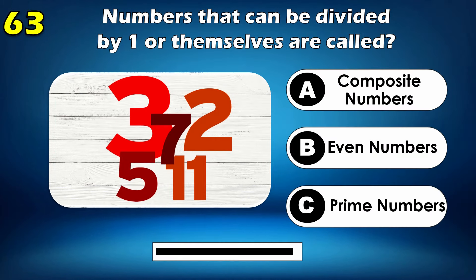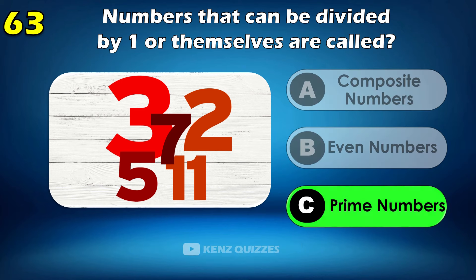Numbers that can be divided by only one or themselves are called prime numbers.